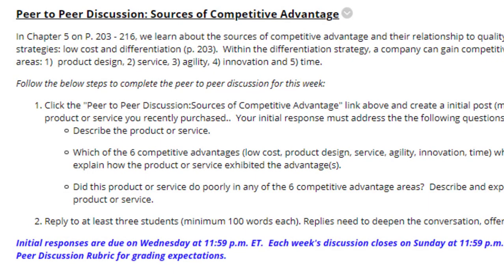Next, we have the peer-to-peer discussion, sources of competitive advantage. This is where you're going to pick a product or service that you recently purchased and answer the following questions: describe the product or service, which of the six competitive advantages — low-cost, product design, service, agility, innovation, and time — were evident, and did this product or service do poorly in any of the six competitive advantage areas? And, of course, lastly, you will be responding to at least two other students.